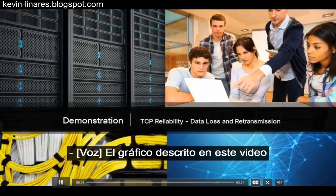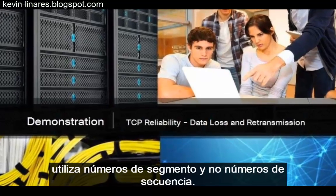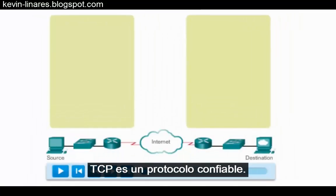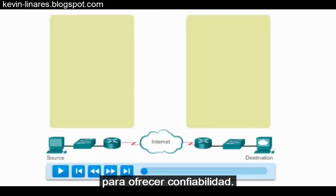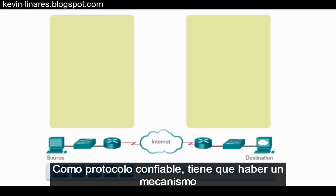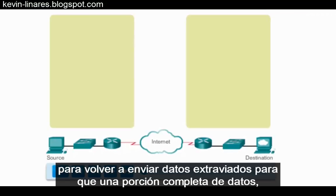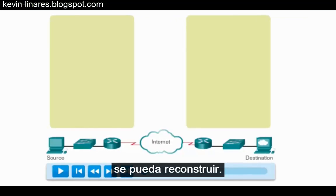The graphic depicted in this video uses segment numbers in place of sequence numbers. TCP is a reliable protocol. It uses sequence numbers and acknowledgments to provide that reliability. But what happens when data is lost in transit? As a reliable protocol, there has to be a mechanism for resending lost data so that an entire piece of data, like a file or an image or a video, can be rebuilt from all of the segments.